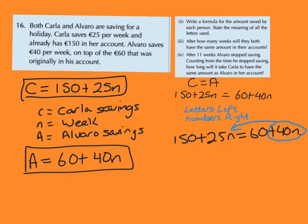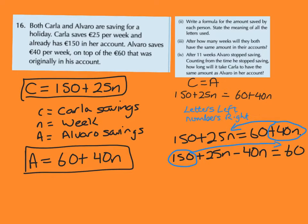I'm going to bring that plus 40n over the far side. So if I bring that plus 40n over the far side, I get 150 plus 25n. Whatever sign that is on the right-hand side, it becomes the opposite sign on the other side. So instead I have 40n here and that's equal to 60. I have 150 on this side, and I want that over the far side so I have all my letters to the left and my numbers to the right.